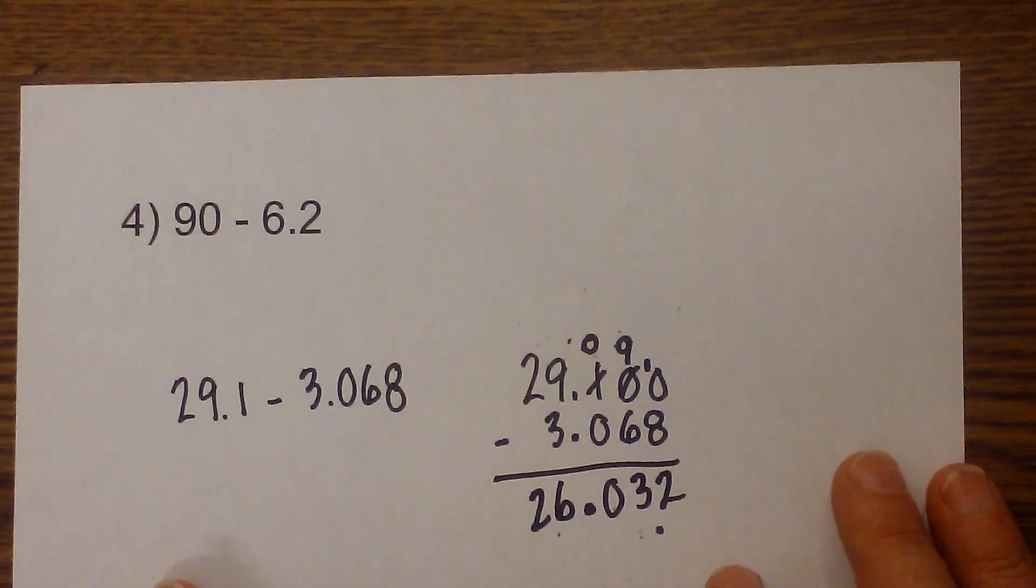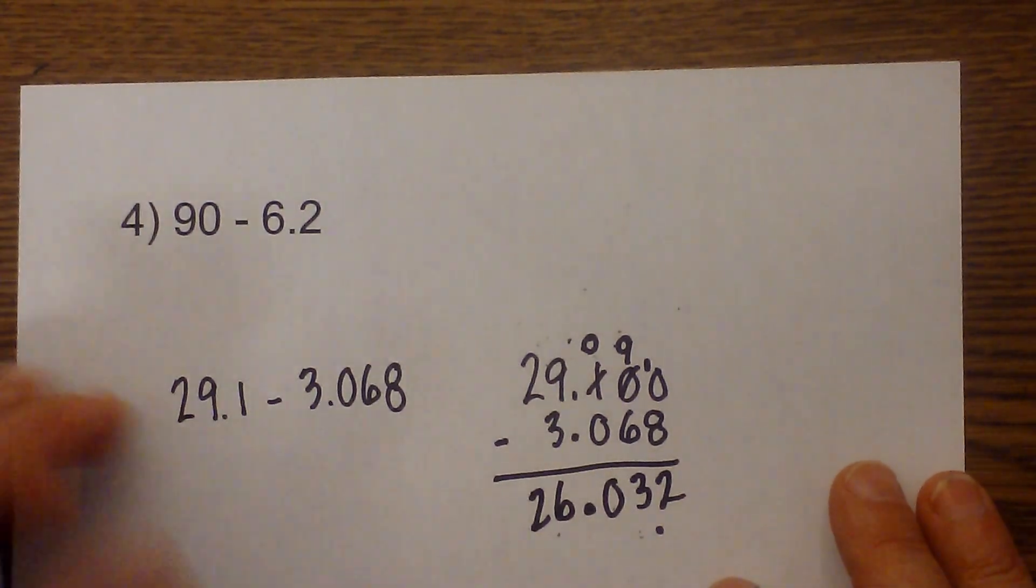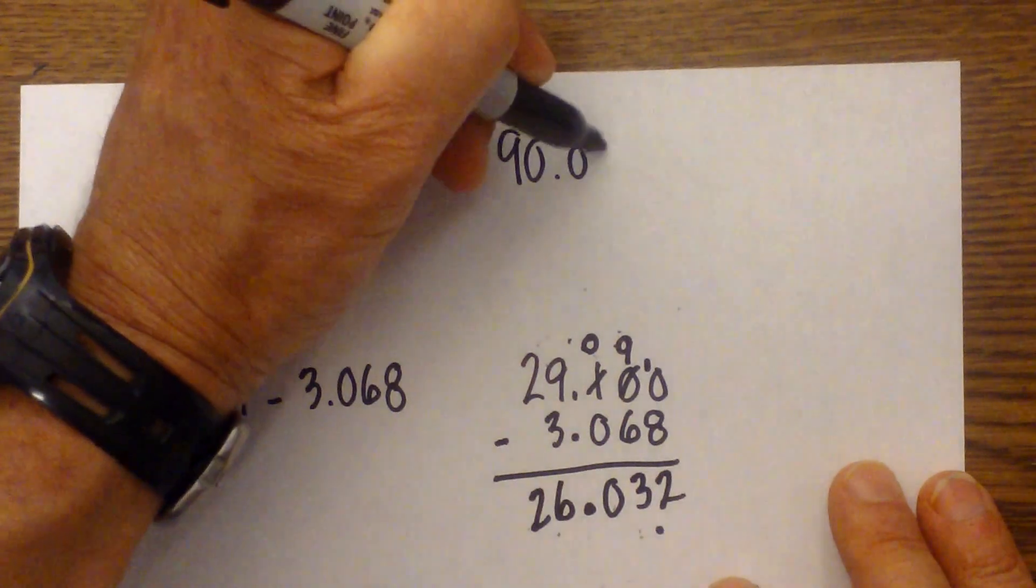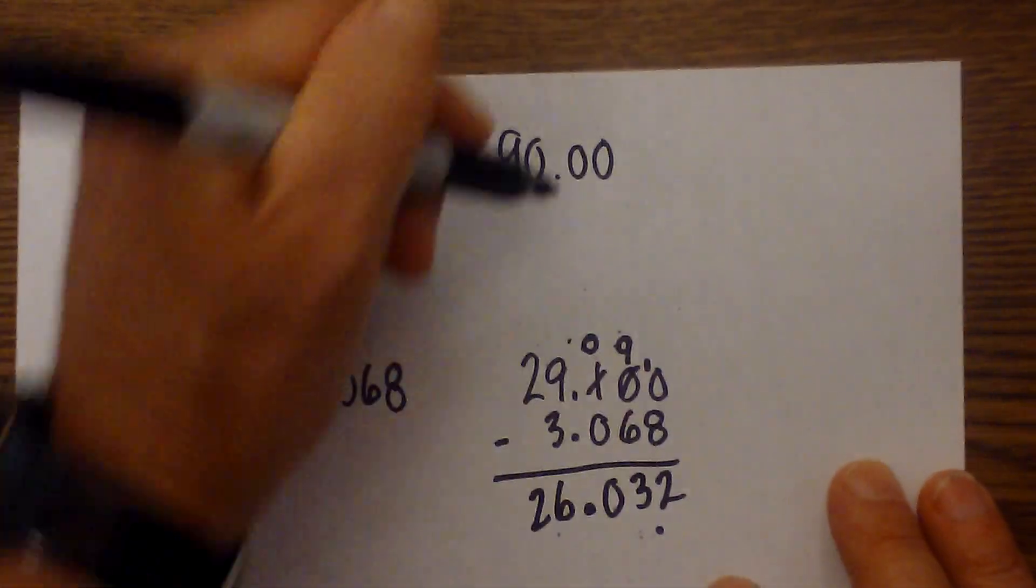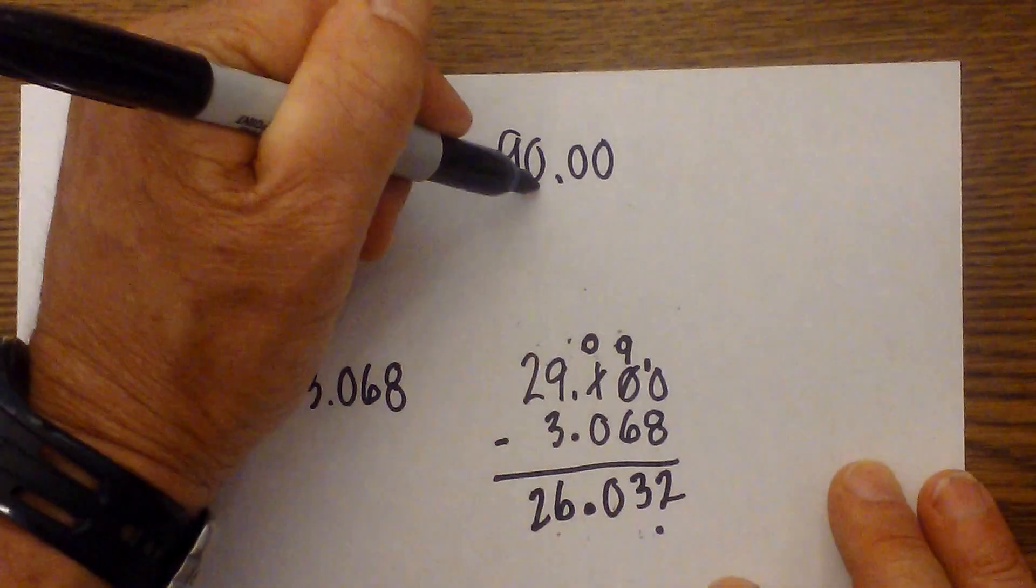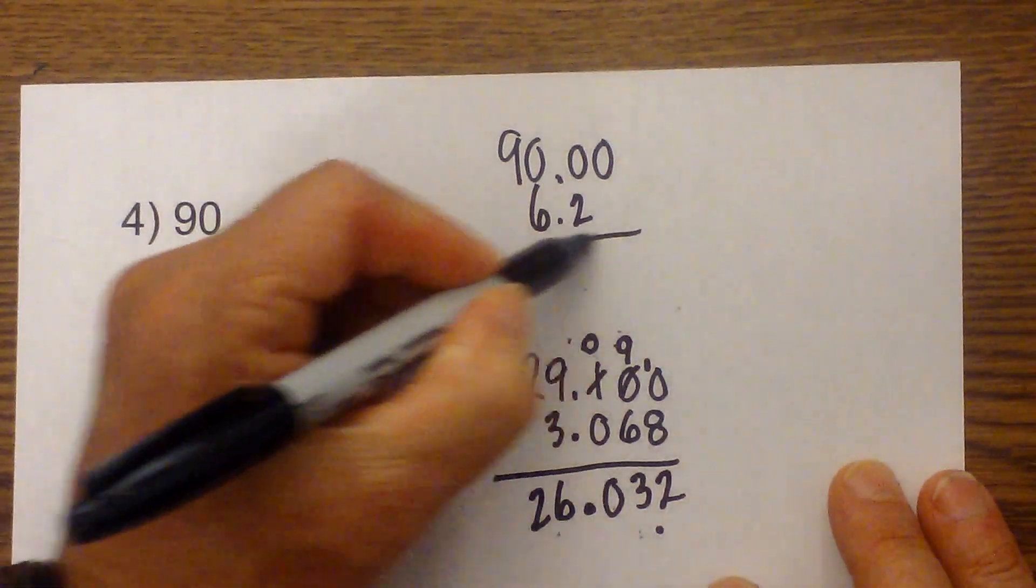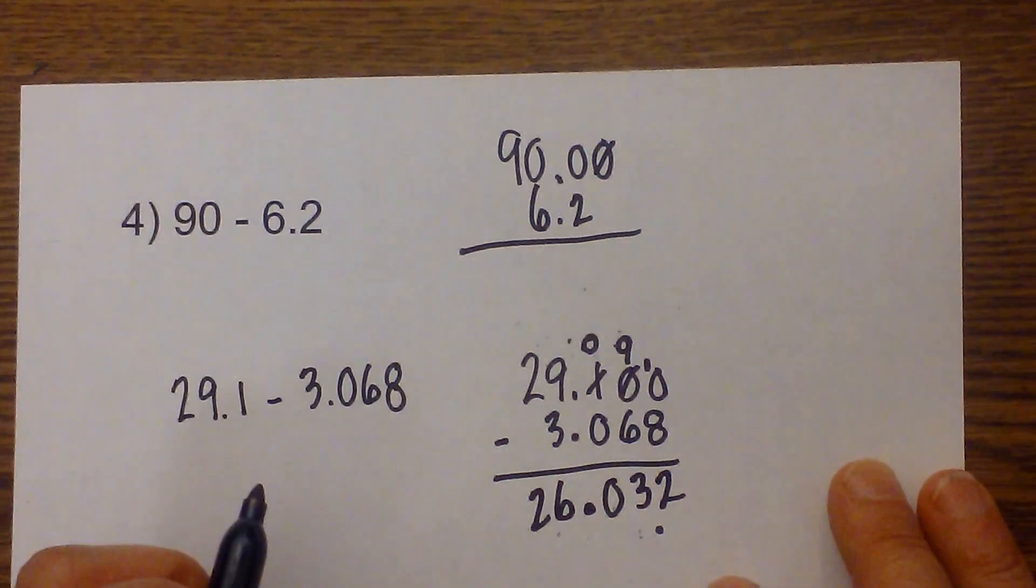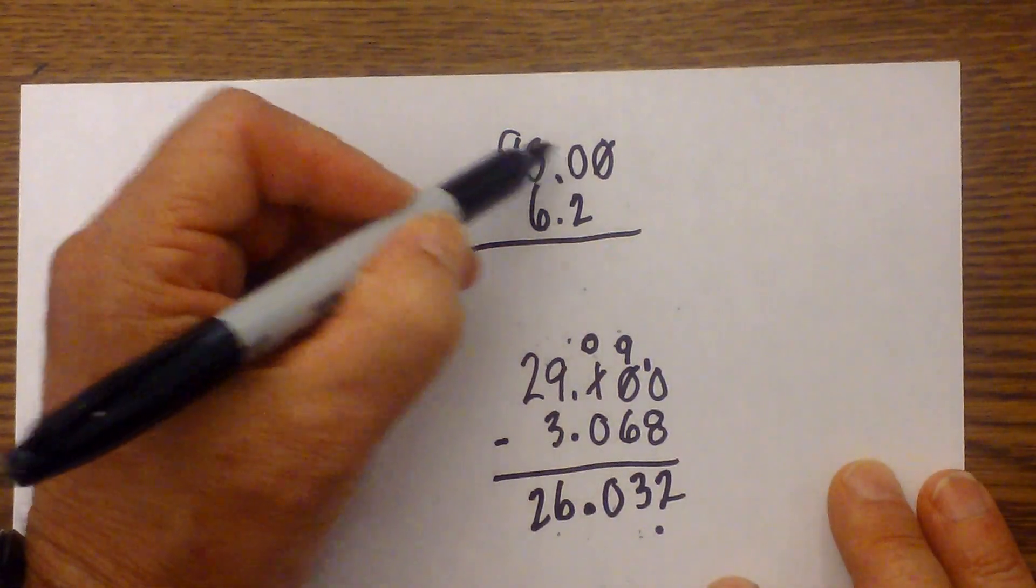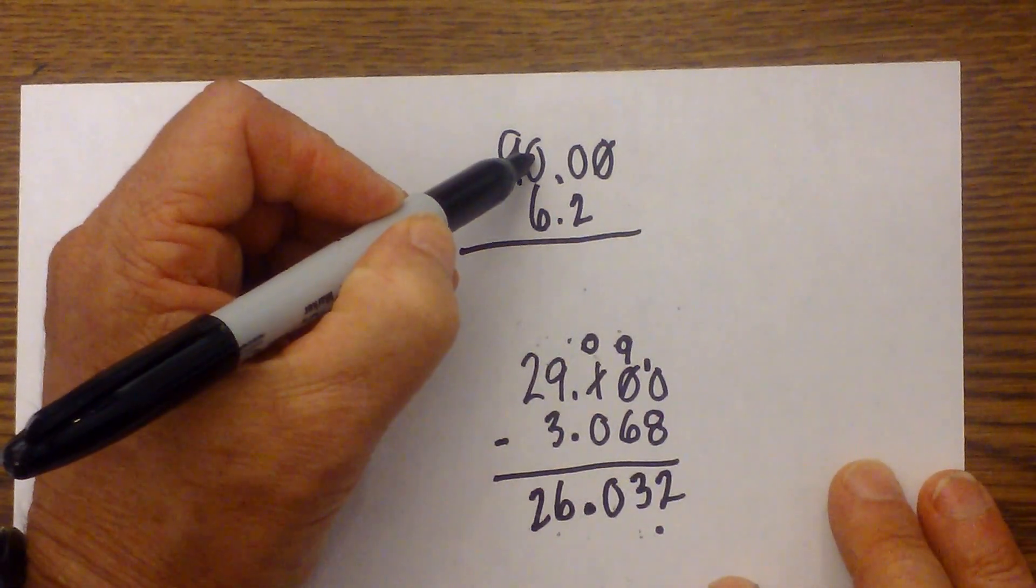Okay, and finally let's work one more example. I'll rewrite this one. Ninety, I'm going to add a couple zeros at the end. Here's your decimal, 6.2.